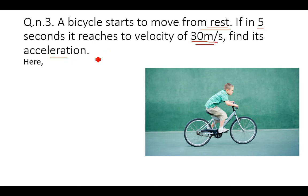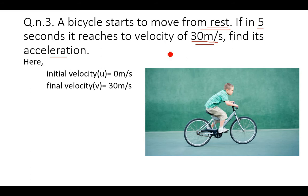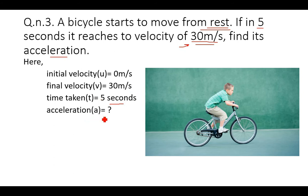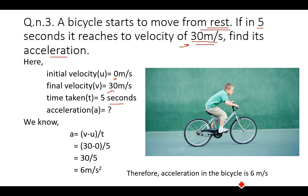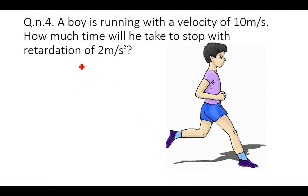Initial velocity u = 0 m/s since the bicycle starts from rest, final velocity v = 30 m/s, and time taken t = 5 seconds. Acceleration = (v − u) / t = (30 − 0) / 5 = 30 / 5 = 6 meters per second squared. Therefore, the acceleration of the bicycle is 6 meters per second squared.